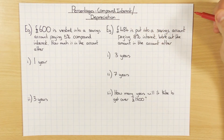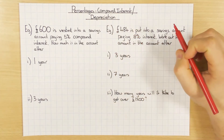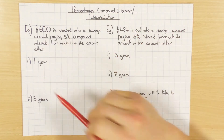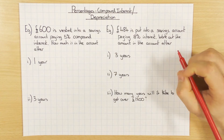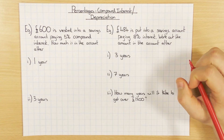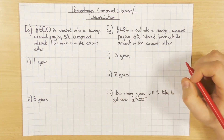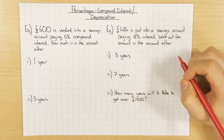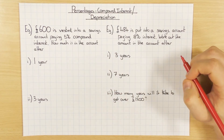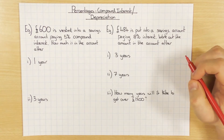Compound interest is not to be confused with simple interest. Compound interest is when you have an amount and in this case it will increase by 5%. After one year you'll get the new amount after it's increased by 5%, and if you were to work out for the second year you would work out 5% of the new amount and add it on, and keep going. So let's get started and hopefully that will make a bit more sense in a minute.